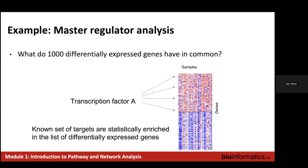Here's another example: we might find that a set of genes are all known targets of a transcription factor or a micro RNA. They would then be enriched in targets of that transcription factor, and we might be able to say that transcription factor is explaining the pattern — upregulating some genes and repressing others — giving us a mechanistic hypothesis to work with.